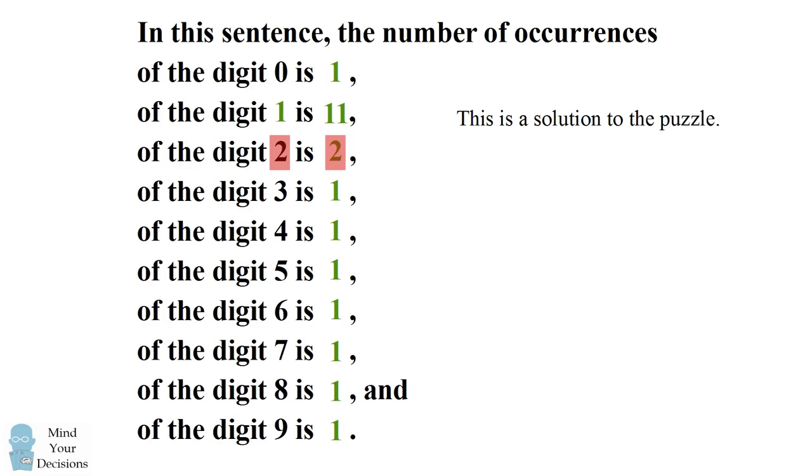So we've come across one solution. How do we find another? We'll just make an educated guess. The digit one occurs eleven times, and that's a two digit number.